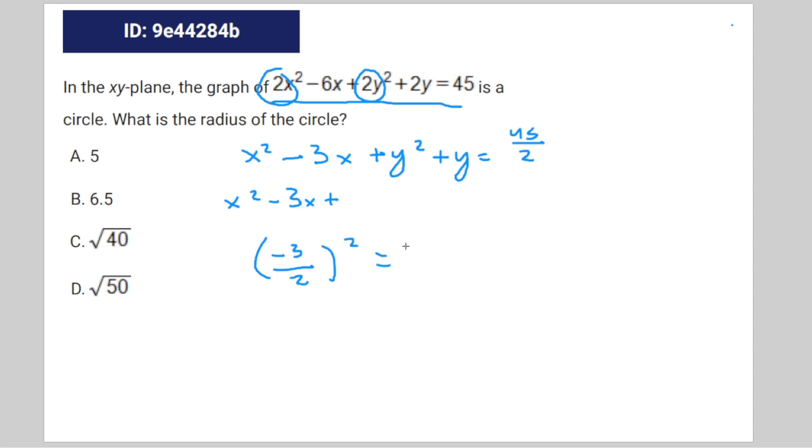And then again y squared plus y plus 1 half to the power of 2, which is 1 fourth, is equal to 45 over 2. And then we're going to add these to each other aside to keep it even.